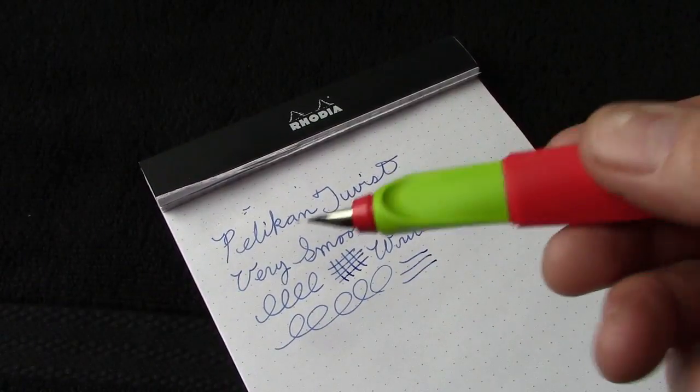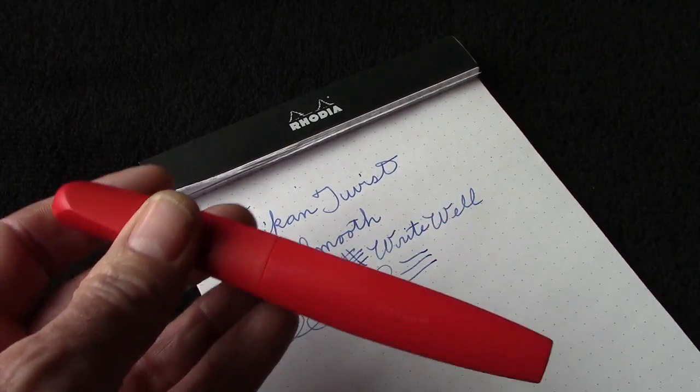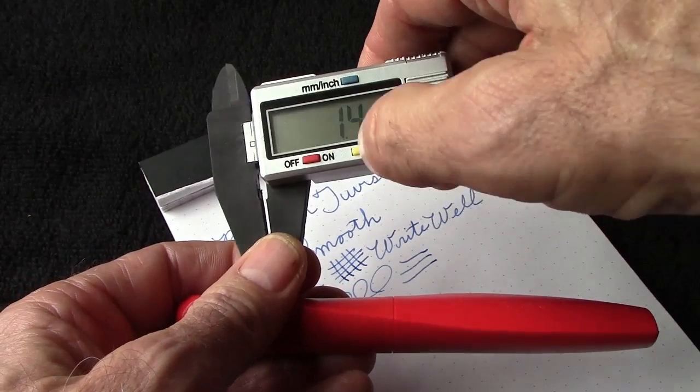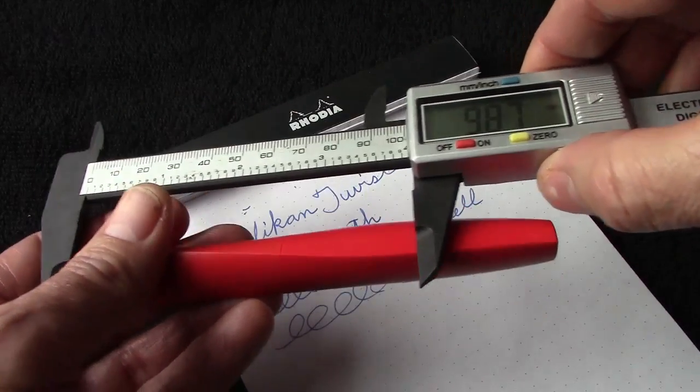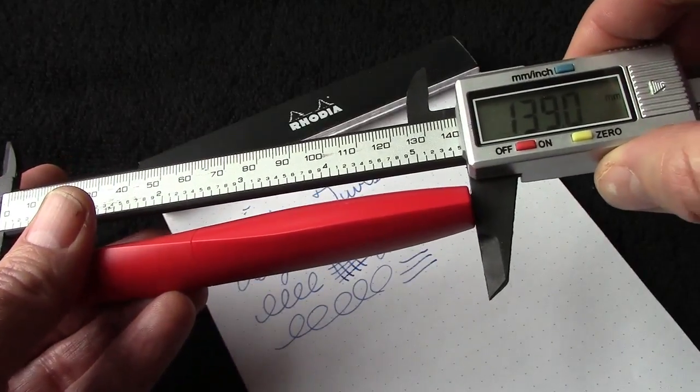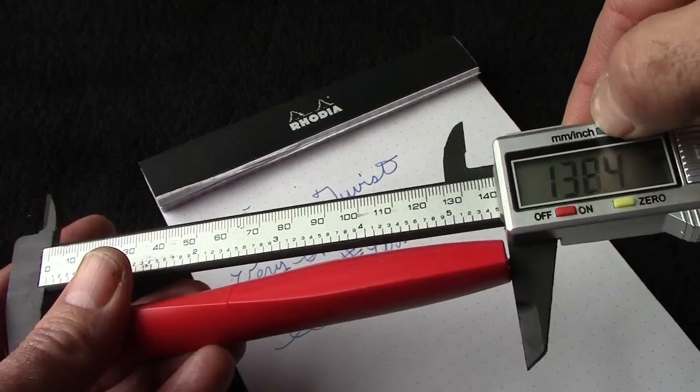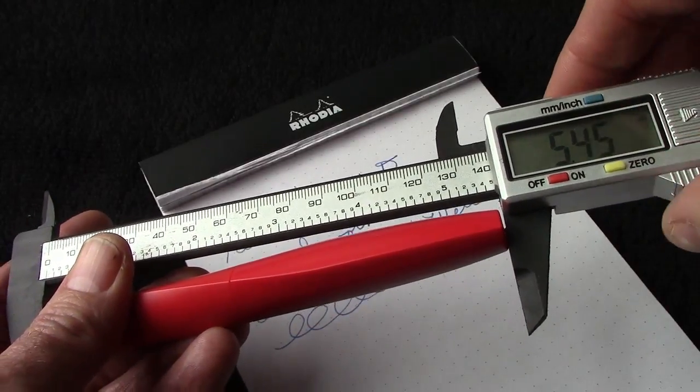So what I thought we would do is take a look at some of the dimensions, and we'll do that real time. And bring out my calipers, turn them on, zero it, and we'll do some measurements. So it's about 139 millimeters. And if I press the button, it's 5.45 inches. So that's nice.